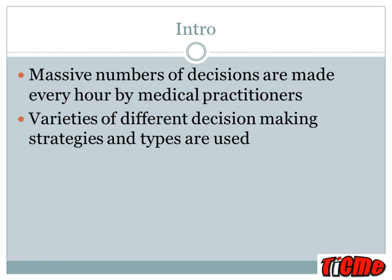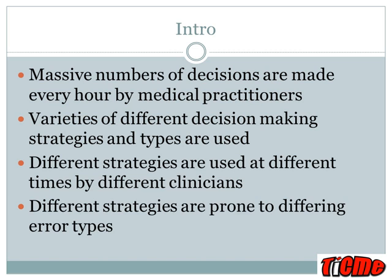In emergency, we make massive numbers of decisions every hour. There are studies saying that emergency physicians make up to two decisions every minute for their entire shift. They also get interrupted every 30 seconds. So there's a lot of cognitive pressure on. There are varieties of different decision-making types that people use, and good clinicians use different strategies at different times. It's important to know that these different strategies are prone to different sorts of error types.